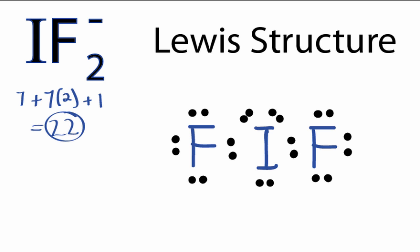If you check the formal charges, you'll see that the Iodine has a negative 1 formal charge, the formal charge on the fluorines is 0. And that makes sense, because this is a negative 1 charge for the entire molecule.